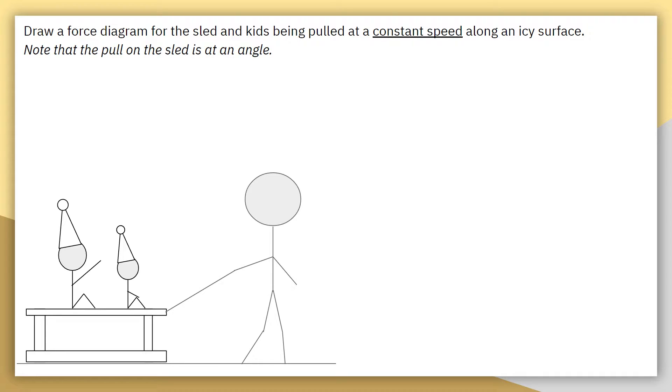Ok, so right now we're going to draw a force diagram for the sled and kids being pulled at a constant speed along an icy surface. Now, one thing that is important to note is that the pull on the sled is at an angle.